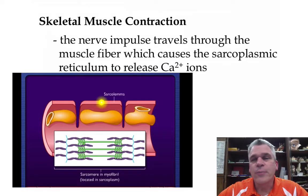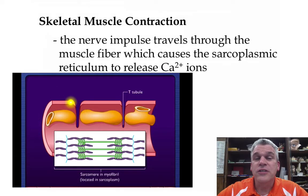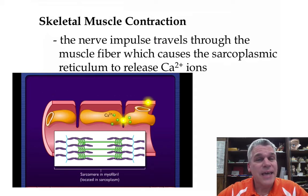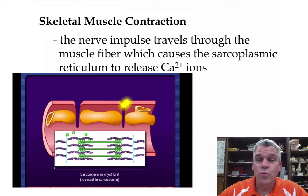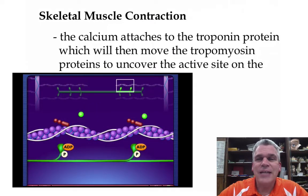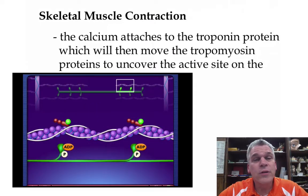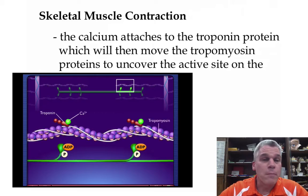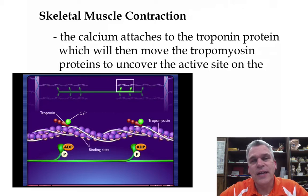Now that the nerve impulse is in the muscle fiber, it's going to cause the sarcoplasmic reticulum to release calcium ions. Remember, the sarcoplasmic reticulum stores calcium temporarily. The calcium will attach to the troponin protein, which will then move the tropomyosin protein and uncover the active site on the actin.